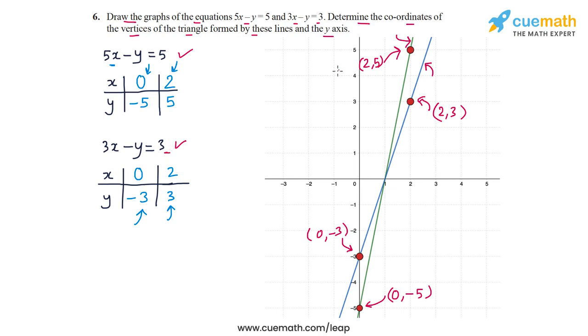So with that, we've plotted the lines and now let's find out the coordinates of the vertices of the triangle formed by these lines and the y-axis. So what are those coordinates? So one is this point, 0, minus 3, this point here.